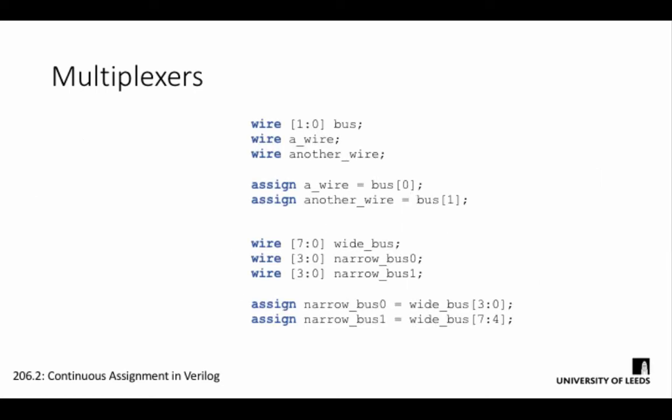One of the things we can do with continuous assignment is connect different nets and buses together, without necessarily routing them through any components. As you know from previous weeks, we can address individual nets on a bus in a similar way to how you would access array elements in C++. We can use this addressing to connect individual wires in a bus to different places, or even separate wide buses into narrower ones.